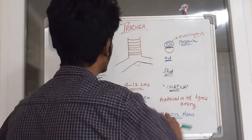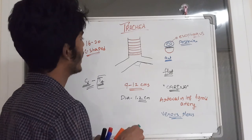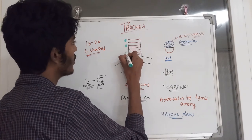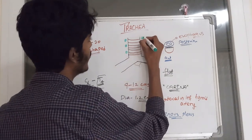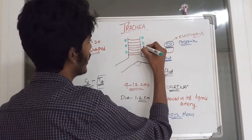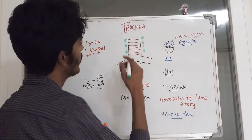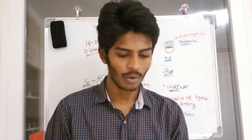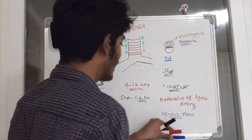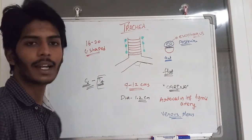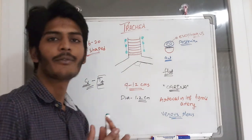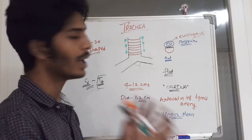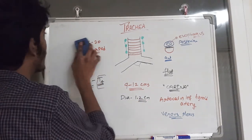Parallel to the trachea are the paratracheal lymph nodes — a chain of lymph nodes lying next to the trachea. Now we will move on to discuss the bronchi and bronchial tree, as many students are confused about the different types of bronchi.